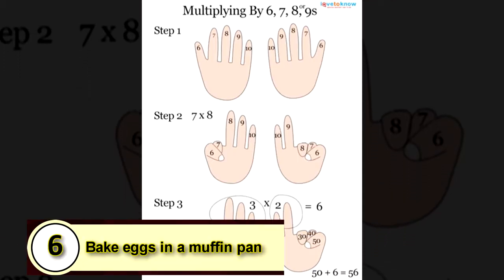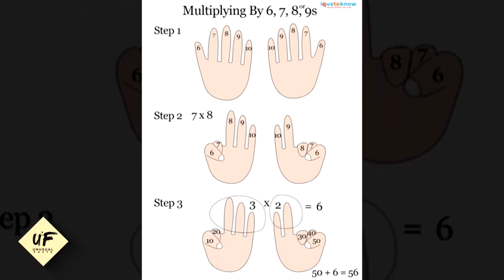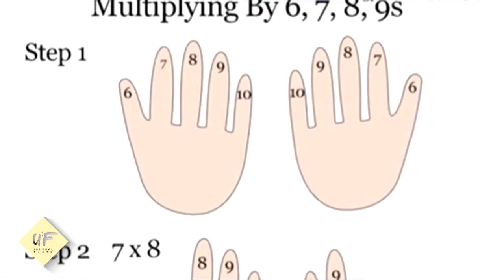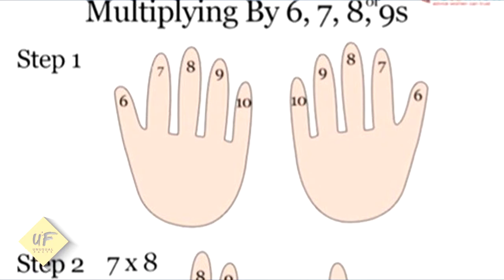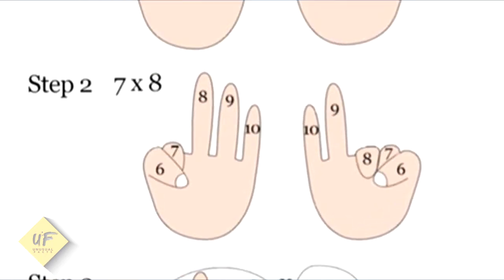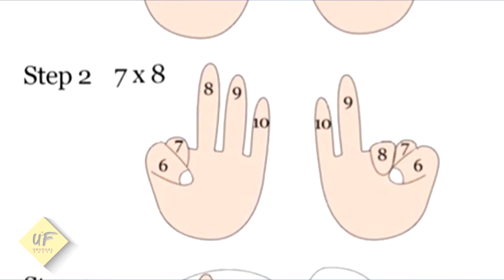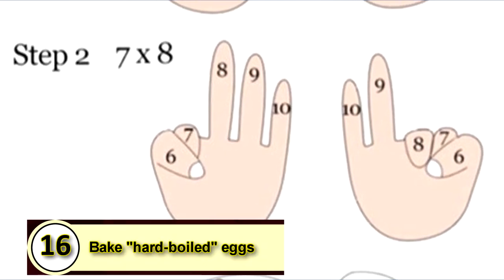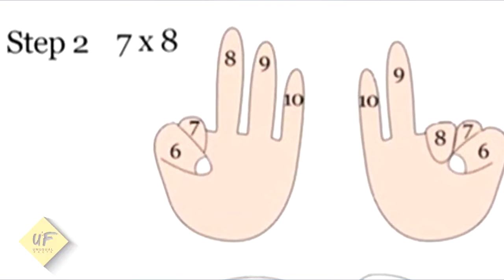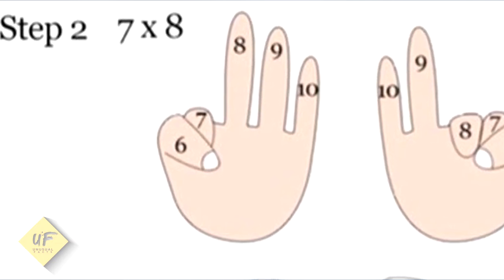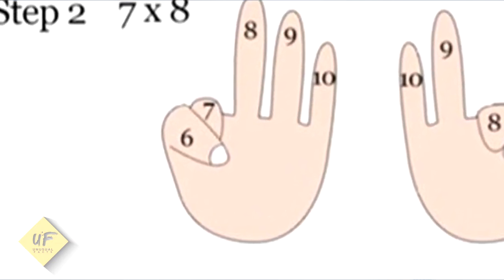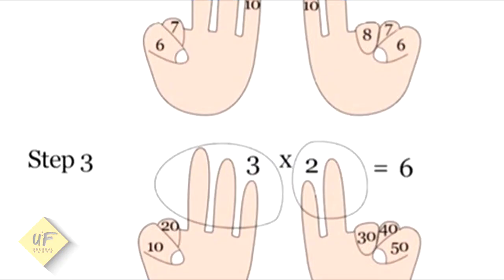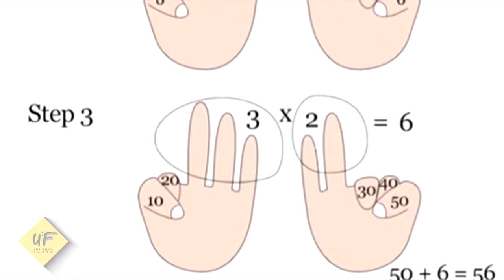Number 6: Multiplying by 6, 7, 8, or 9. Here's a trick we're all going to want to remember. Step 1: Label your fingers. Start with the thumb at number 6 and the pinky at number 10. Step 2: 7 times 8. On one hand, you put down your number 6 finger and your number 7. You're left with 8, 9, 10. On your other hand, you put down fingers 6, 7, and 8. So on one hand you've got down 6 and 7, everything up to 7. And on the other hand you have 6, 7, and 8, everything up to 8.